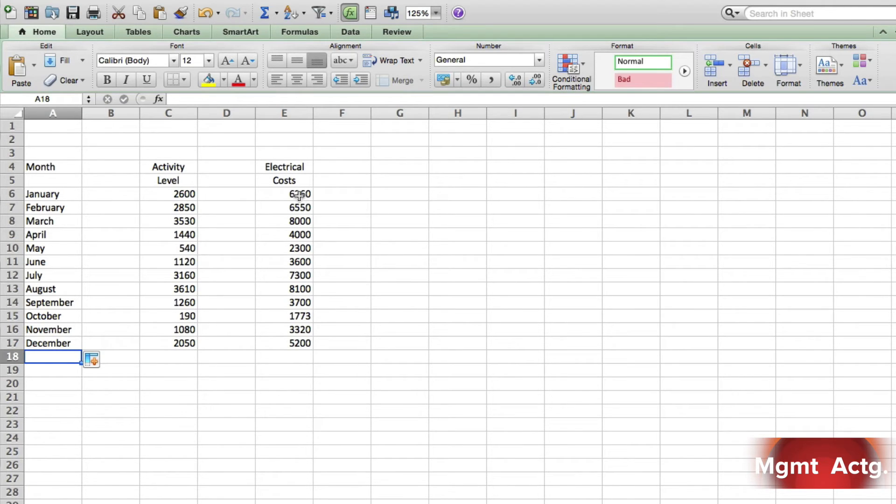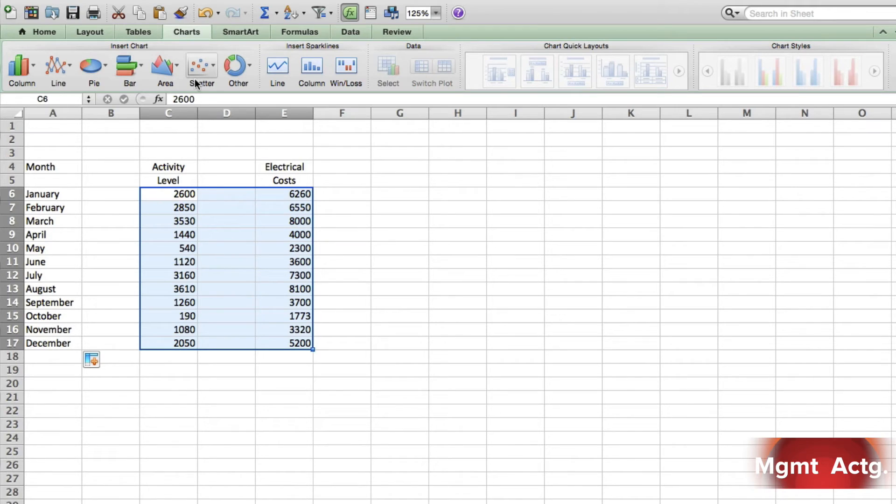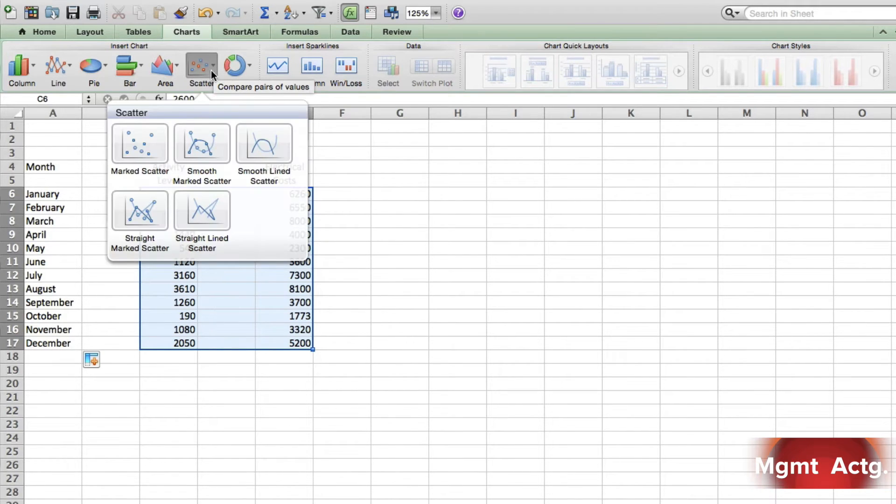So here's our activity level, here are costs. What we want to do is draw what's called a scatter plot. We can draw a straight line this way, a vertical line and a horizontal line, and then plot each point, or we can just do this.